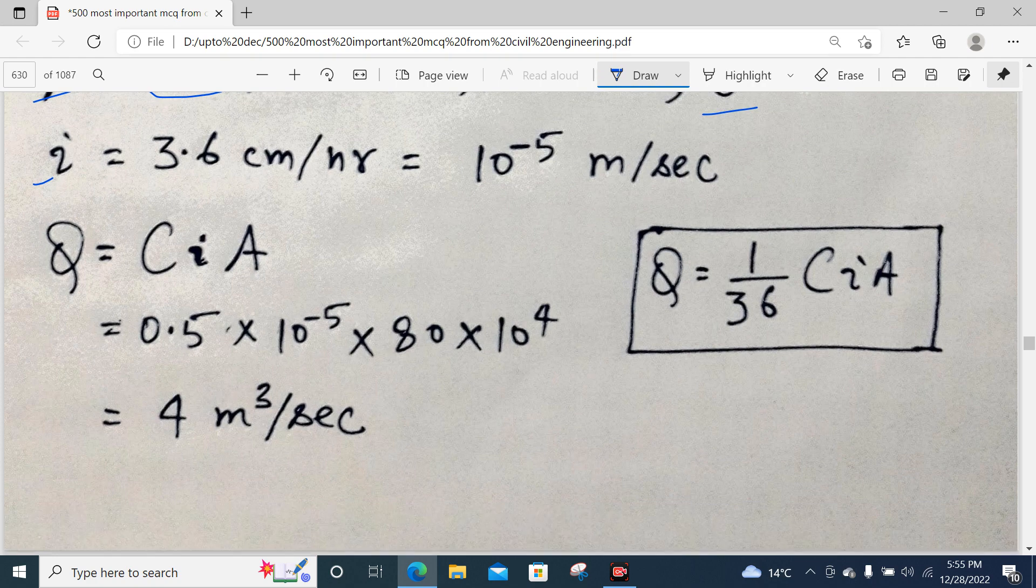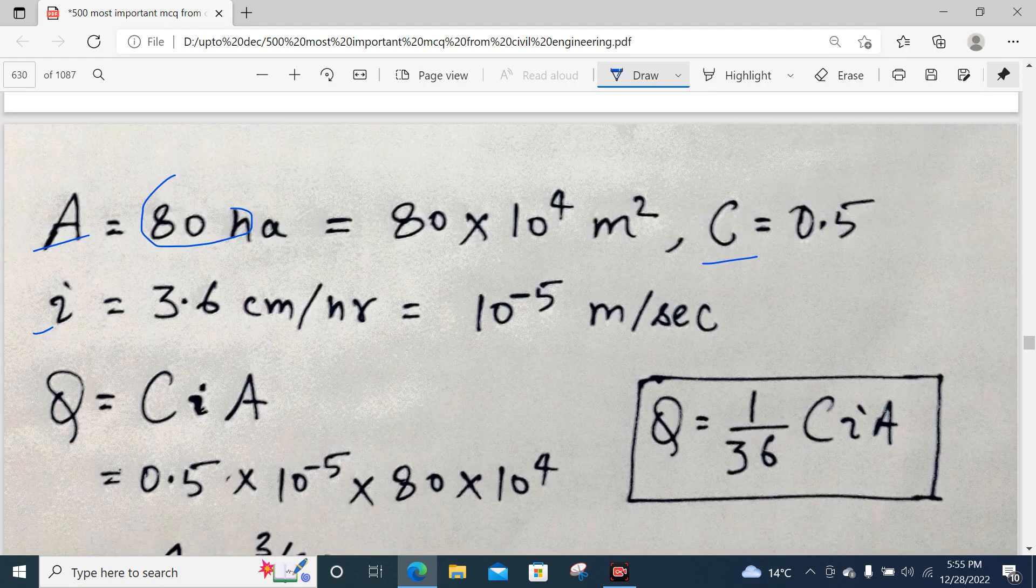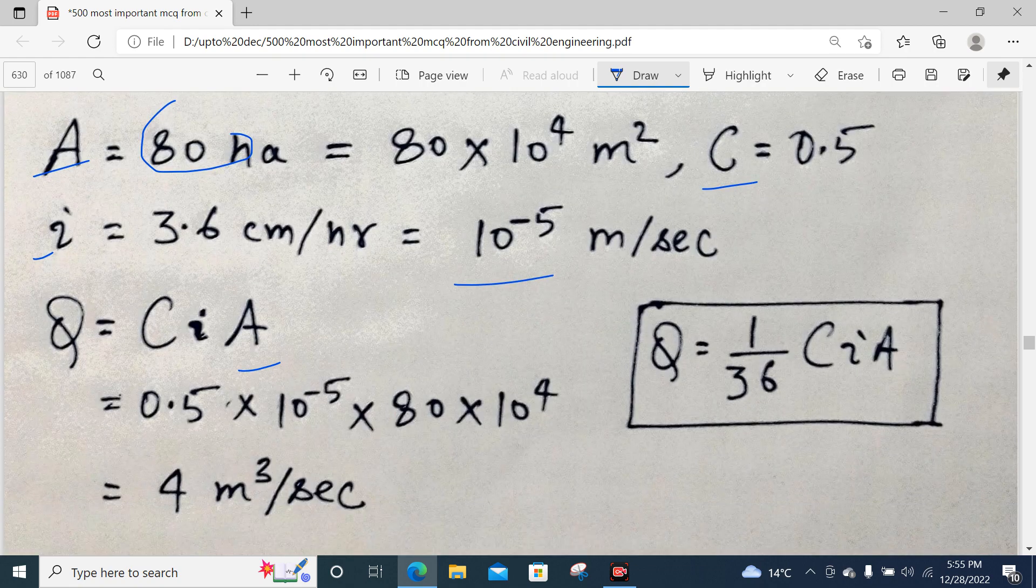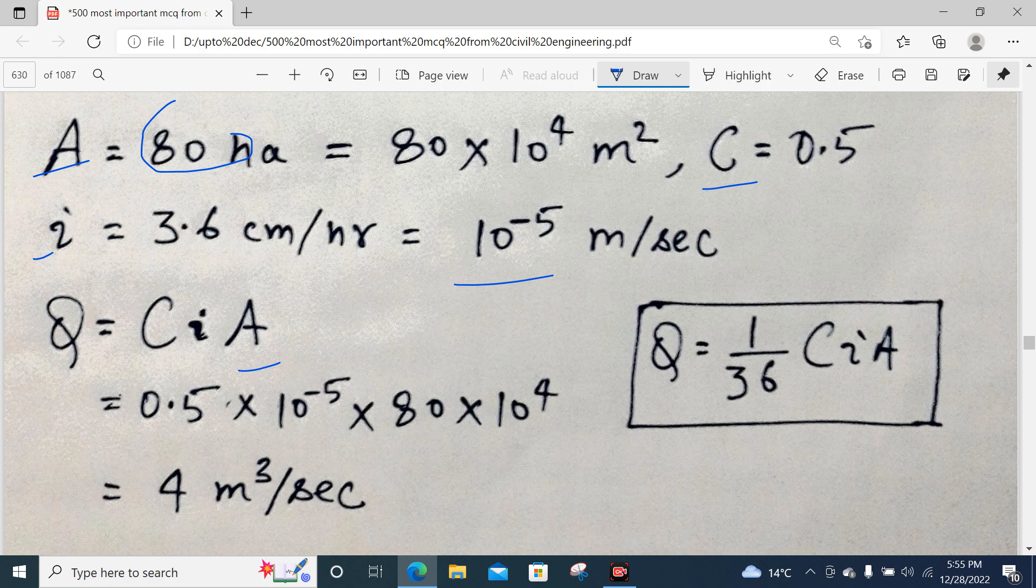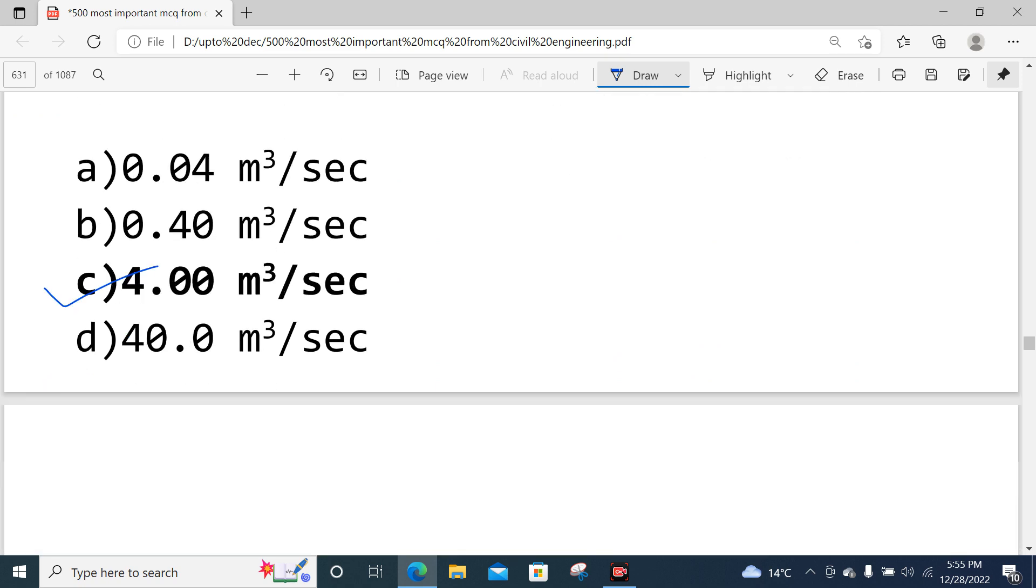Q = C × I × A. C is 0.5, I is 10^-5, area is 80 × 10^4. Ultimately you will get the answer as 4 m³/sec. The correct answer is option number C.